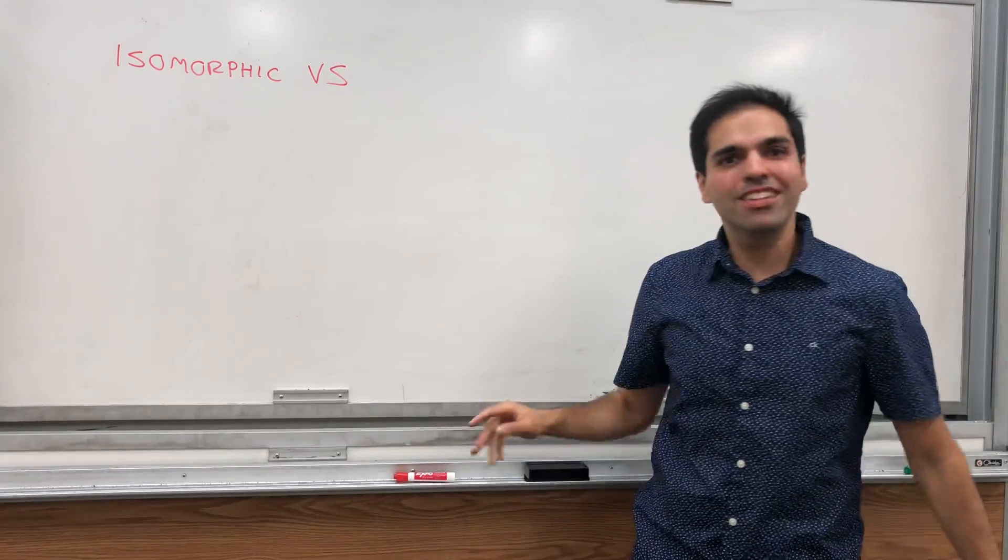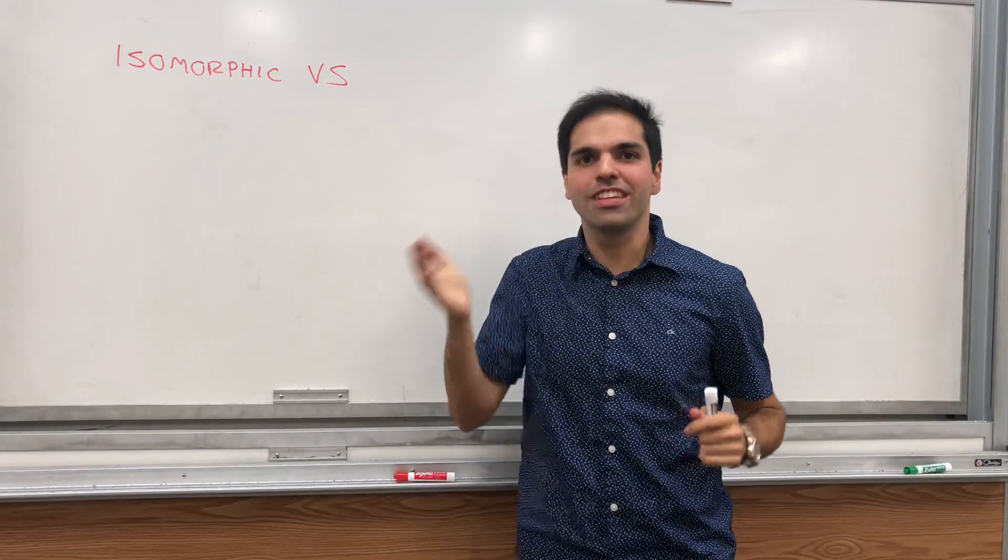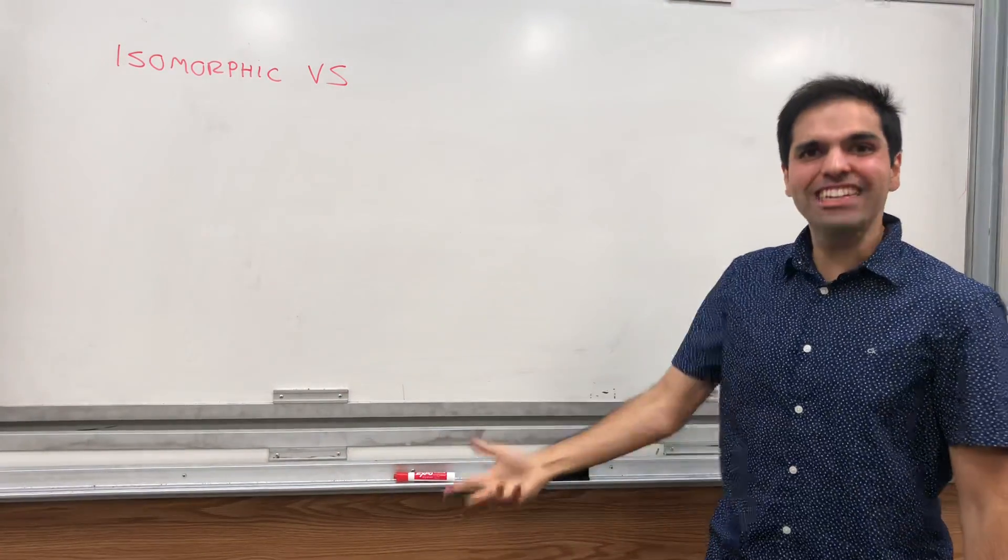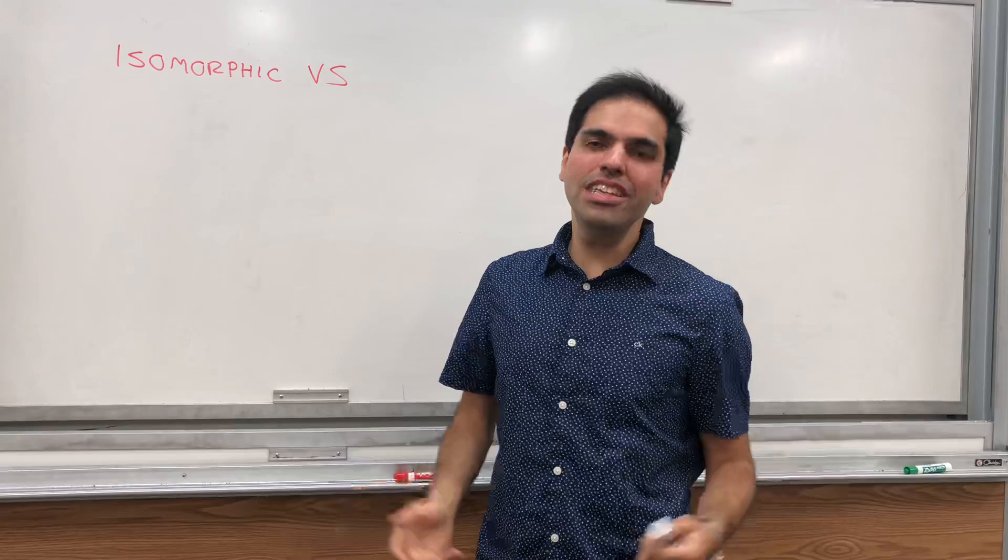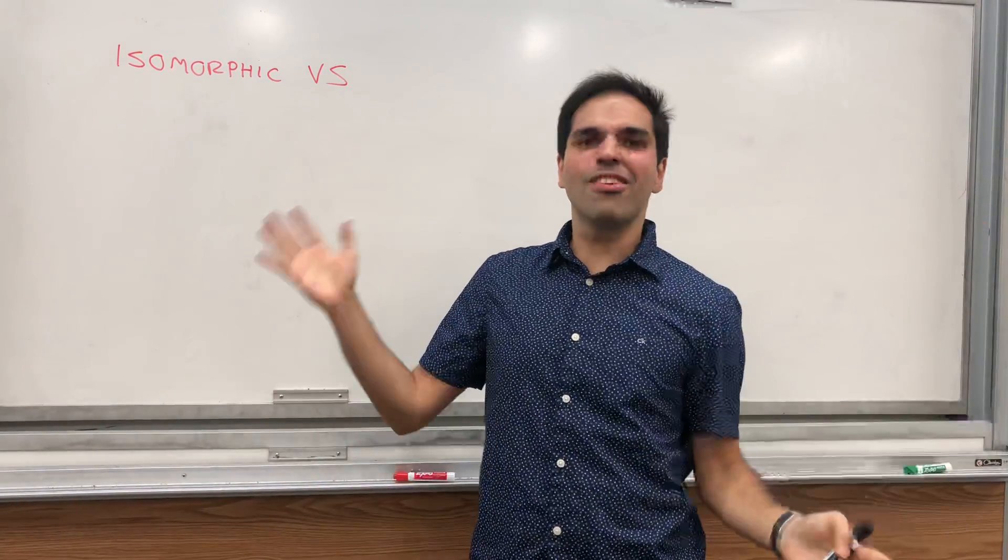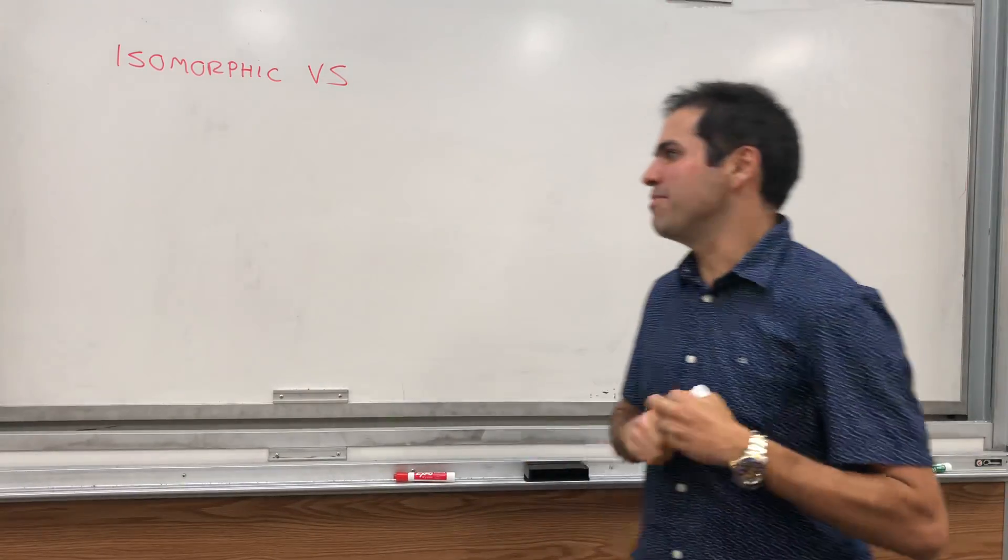Thanks for watching. Today I want to do one of my favorite proofs in linear algebra. Namely, I can give you a very easy criterion to determine when two vector spaces are isomorphic. In other words, when do they have the same shape?